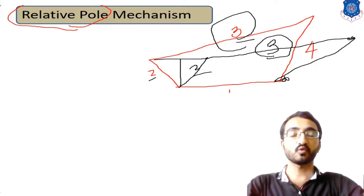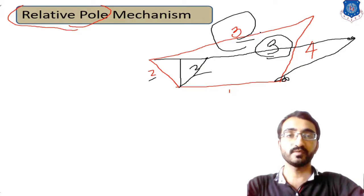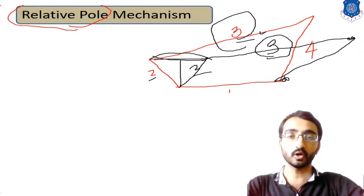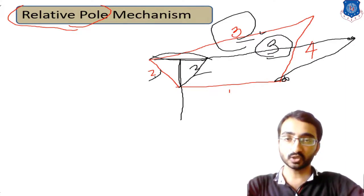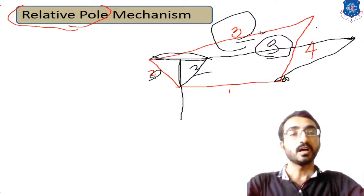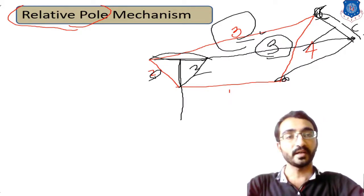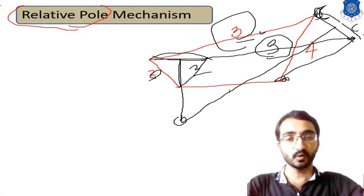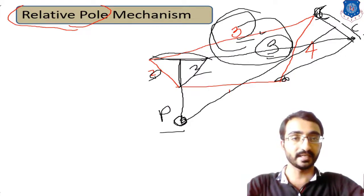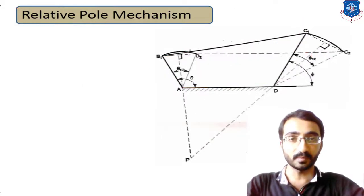If we want to find the fixed point about which link number three is rotating, we can draw the midpoint between the first and second positions of points C and C1. The perpendicular bisectors of these positions will intersect at a center point about which the entire link three is rotating. This point is assumed to be the relative pole — a fixed point for that link's motion.